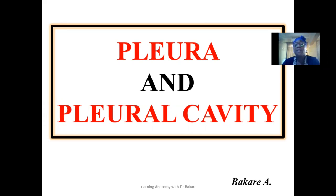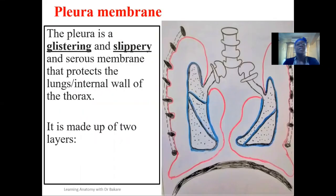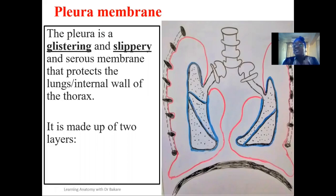Let's look at the pleural and the pleural cavity. The pleural membrane is a thin, slippery, and glistening serous membrane that protects the lungs and the internal wall of the thoracic cavity. When you open through the thorax and see the lungs, they appear shiny because of the pleural membrane overlying them, and also lining the interior walls of the thoracic cavity.